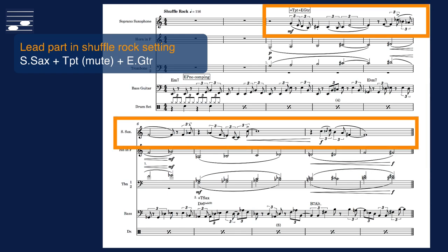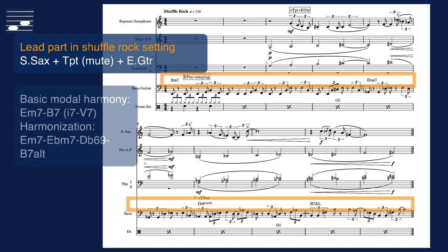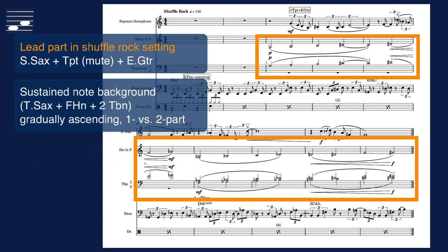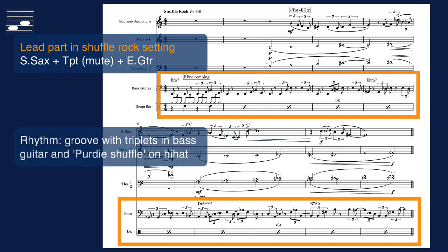After overlaying a rhythm on the fourteen note series, it becomes the lead part for soprano saxophone, muted trumpet and electric guitar. This phrase is set in a modal key, with another half cadence E minor 7 to B dominant 7 as basic harmony, and we insert intermediate chords. Tenor saxophone, horn in F and two trombones play a sustained note background, first unison, later in parallel consonant thirds and ascending to a climax at the end. The shuffle rock groove is provided by the triplet patterns in the bass guitar and the purdie shuffle on hi-hat.